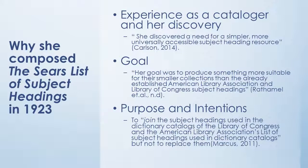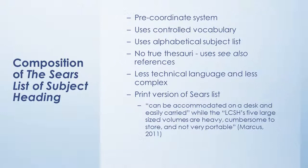Her purpose was to join the subject headings used in the dictionary catalogs of the Library of Congress and the American Library Association lists of subject headings, but not to replace them. Sears intended for her list to be kept brief, and in her original work included instructions on how to keep the work down to a single volume. It is a pre-coordinate system which uses controlled vocabulary, alphabetical subject lists with key pattern headings and subject subdivisions. There is no true thesaurus; it uses see-also references. It's less technical language and less complex, developed for small or medium-sized collections. The print version can be accommodated on a desk and easily carried, while the Library of Congress subject headings — five large-sized volumes — are heavy, cumbersome to store, and not very portable. Further, the Sears list is cheaper, which fit the budget of the smaller institutions it was created for.